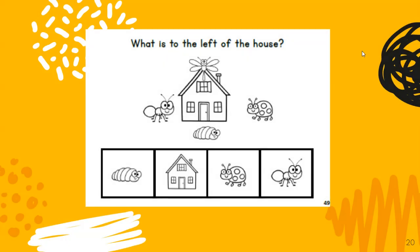What is to the left of the house? If you're not sure, remember — hold your hands out and make L's, and whichever one makes the L the correct way is your left. So which one of these is to the left of the house? It is the ant. He is to the left of the house.